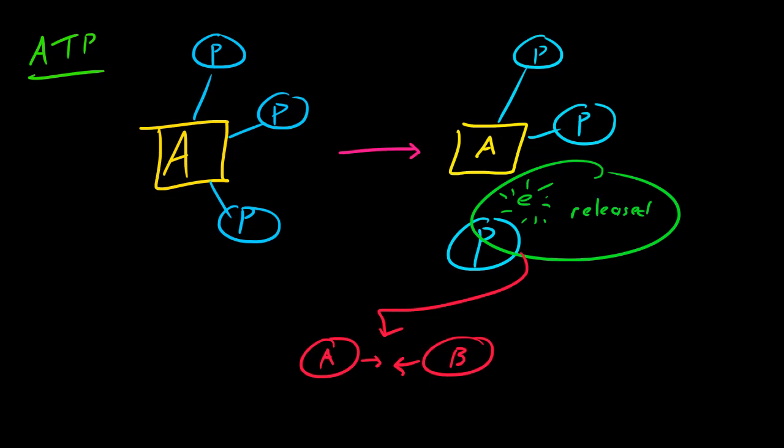So again, what happens in this process is ATP, which is triphosphate, or three phosphates, it becomes ADP, which is di, which is two phosphates. Simple enough.